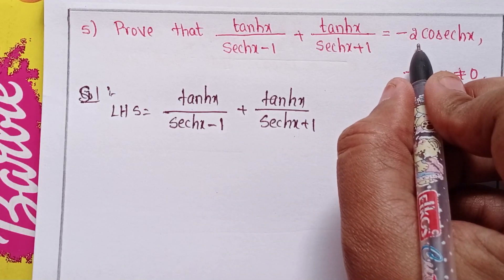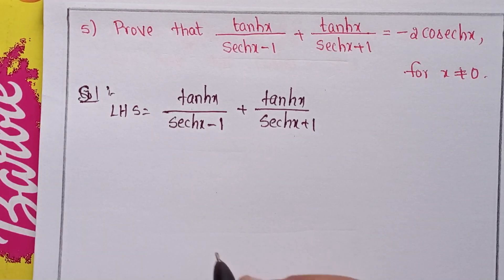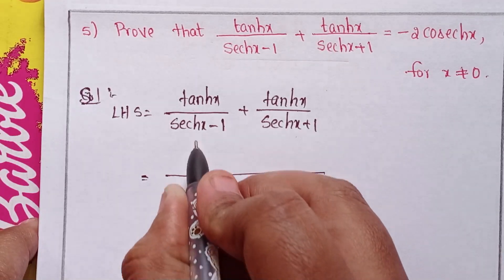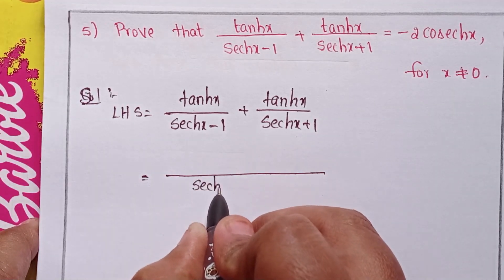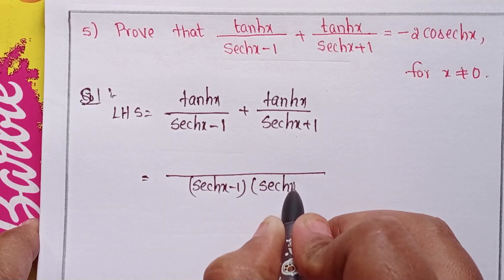We will prove this equals minus 2 cosech x, for x not equal to 0. Taking LCM, we get sech x minus 1 times sech x plus 1.